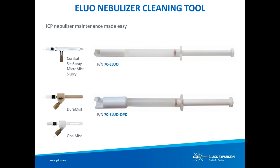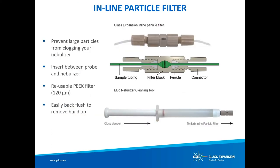The LUO nebulizer cleaning tool is designed to efficiently deliver a cleaning solution through the nebulizer capillary to dislodge particle buildup and thoroughly clean the nebulizer. Glass Expansion has two LUO designs: one for glass concentric nebulizers, which include the Sea Spray, Conical, Micromist, and Slurry, and a separate one for inert concentric nebulizers such as the Opal Mist and Demist. If blockages due to particulates are a frequent issue, consider adding the reusable inline filter. Particulates are not always from the samples themselves — dust particles from the lab environment and fibers from sample pre-filtering can also be sources. The Guardian inline particle filter provides a simple and effective way to eliminate these risks.